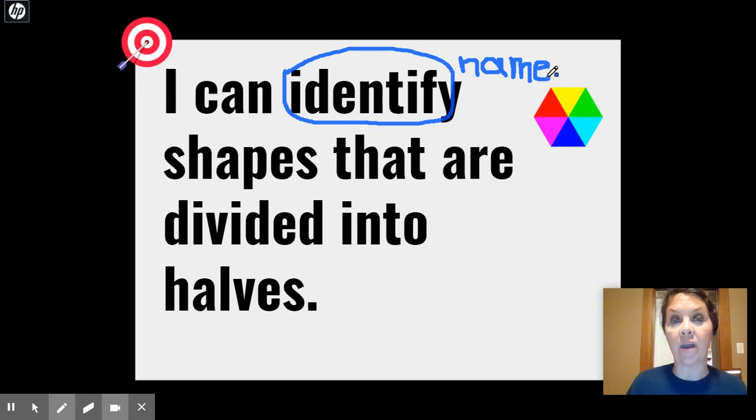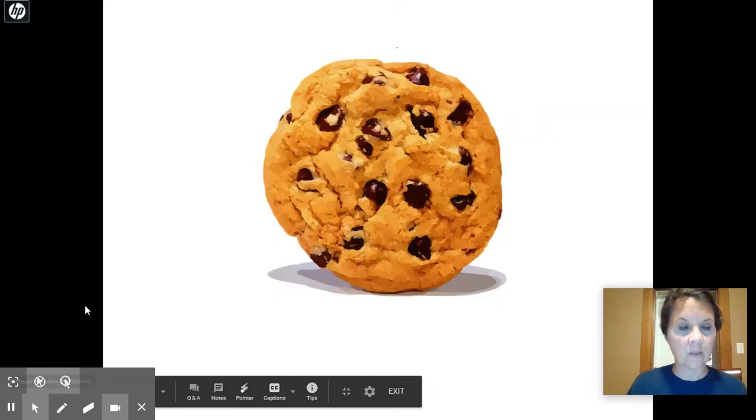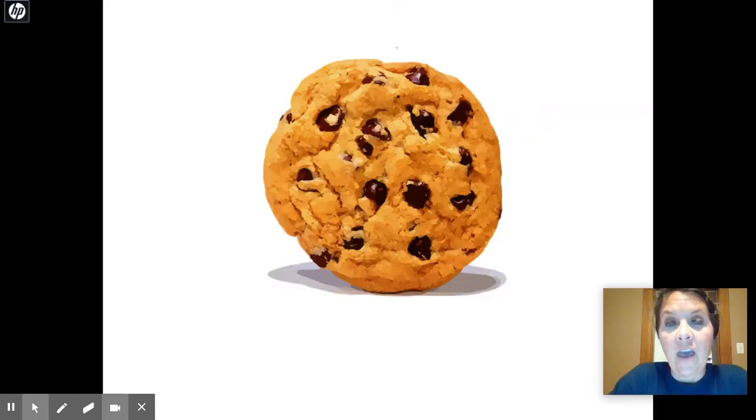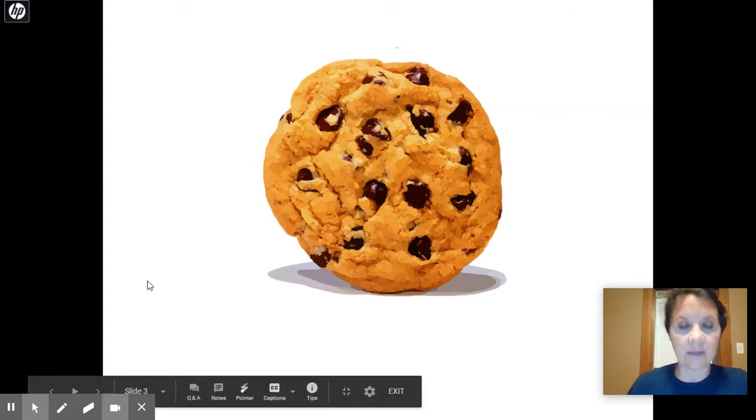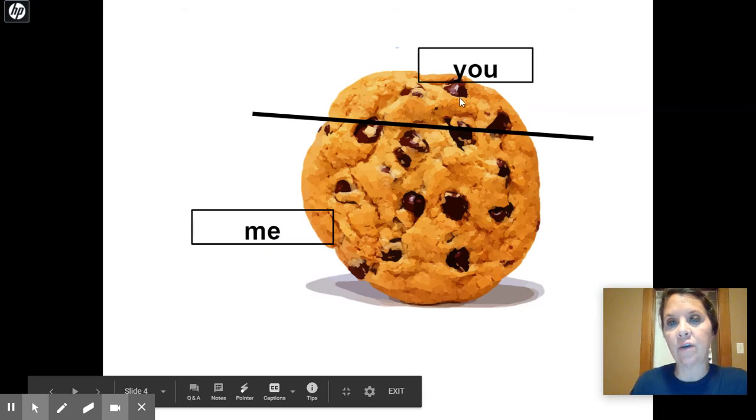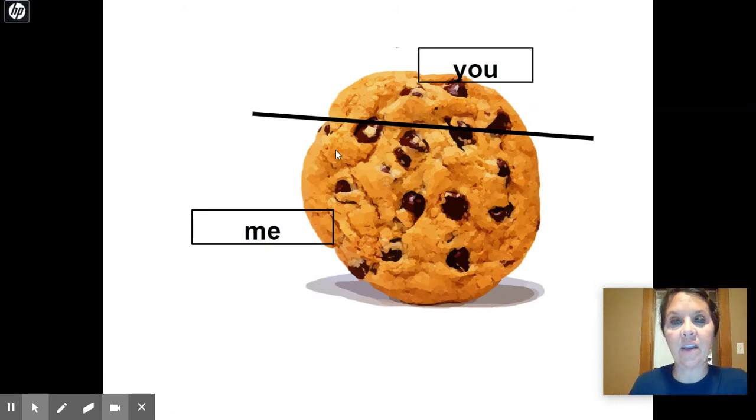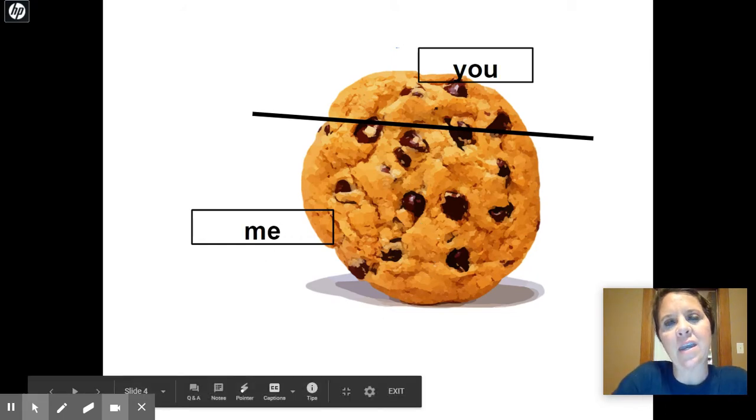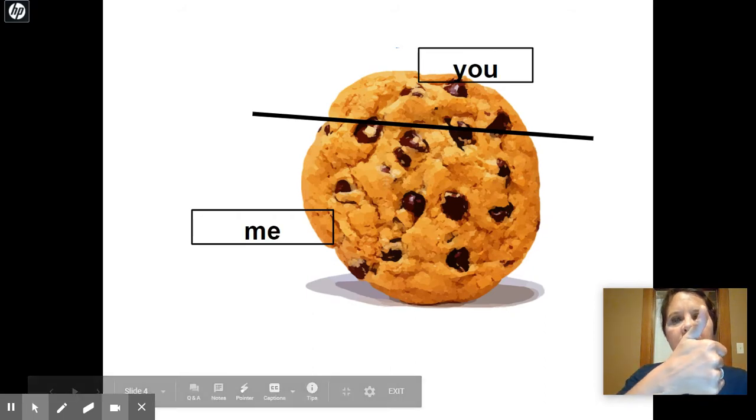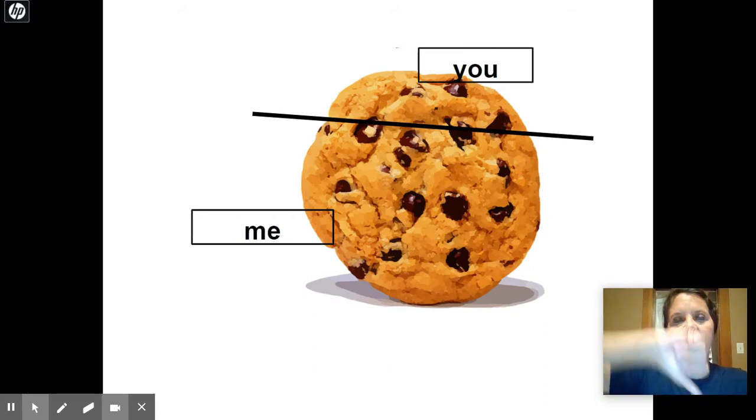So, we are going to be naming shapes that have been divided or broken up into halves. Let's go on and find out what a half is, in case you don't know. So, here's a delicious cookie, and I come to your house with this big, warm cookie. And you say to me, Ms. Carlson, can I have some? Can you break that or divide that up for us?